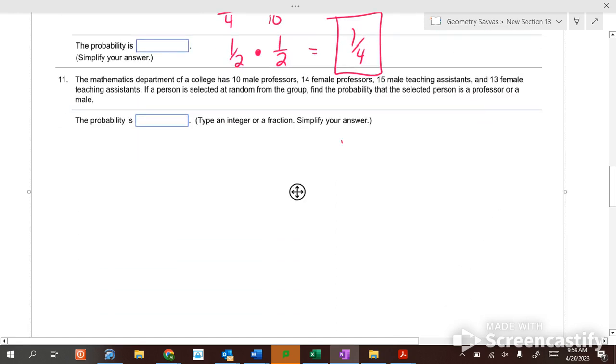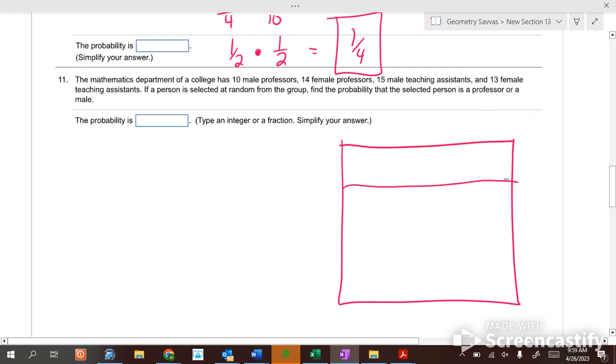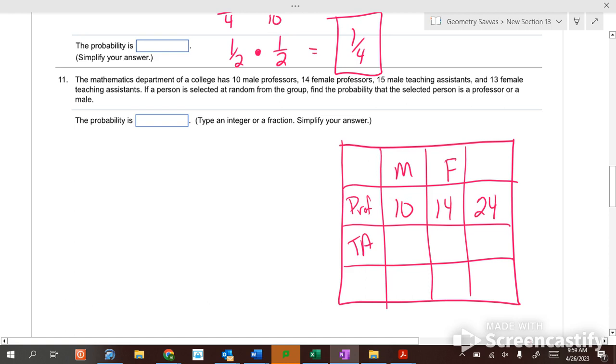Math department. There's professors and there's teaching assistants. There's males and there's females. Male professors is ten. Female professors is fourteen. So there's twenty-four total professors. Male teaching assistants is fifteen. Female teaching assistants is thirteen. So there's twenty-eight total there. So you get twenty-five going down here adding. Twenty-seven here. When you add either way, you get fifty-two. So there's fifty-two total.